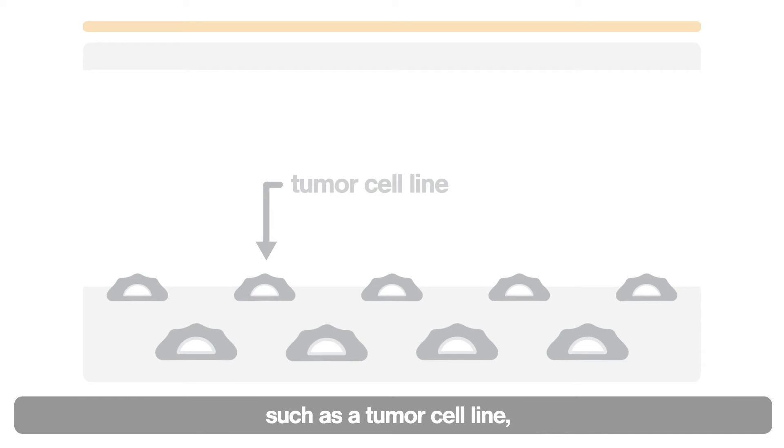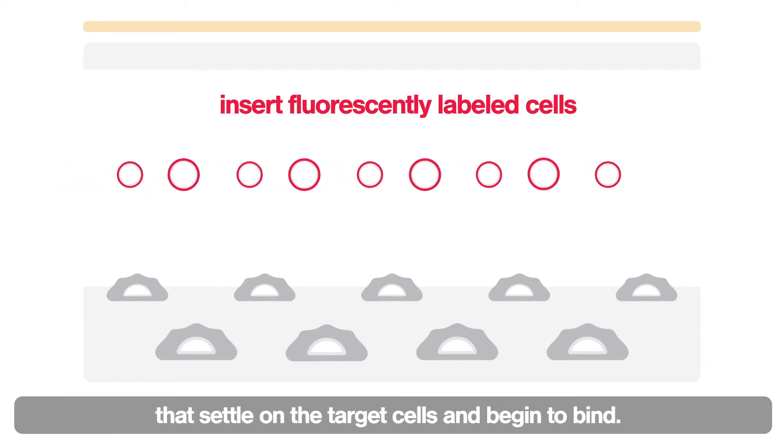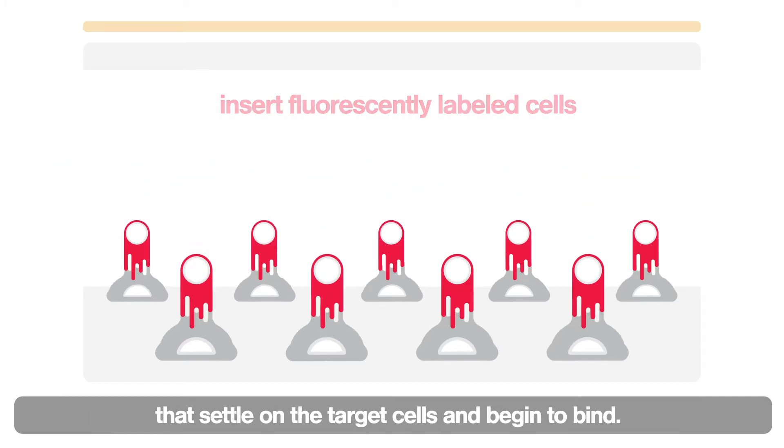The procedure starts by seeding target cells, such as a tumor cell line, on the surface of a chip. This is followed by introducing a population of effector cells that settle on the target cells and begin to bind.